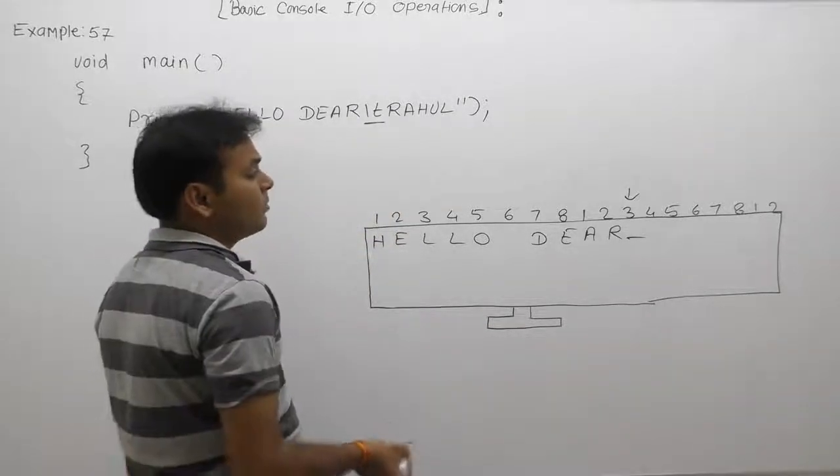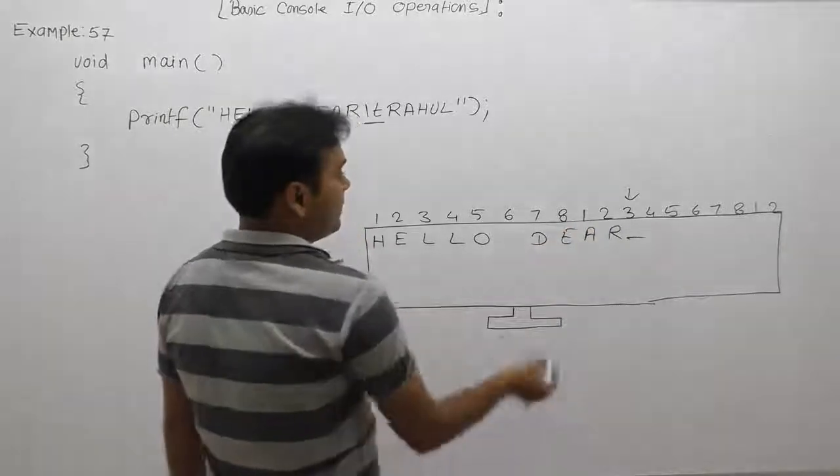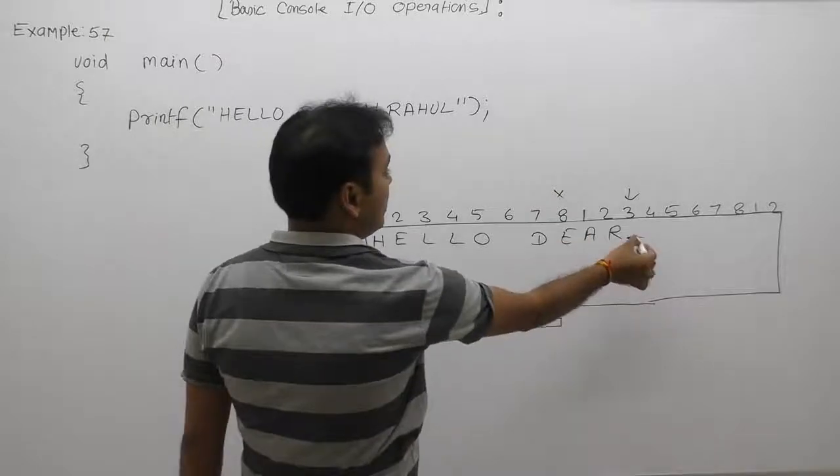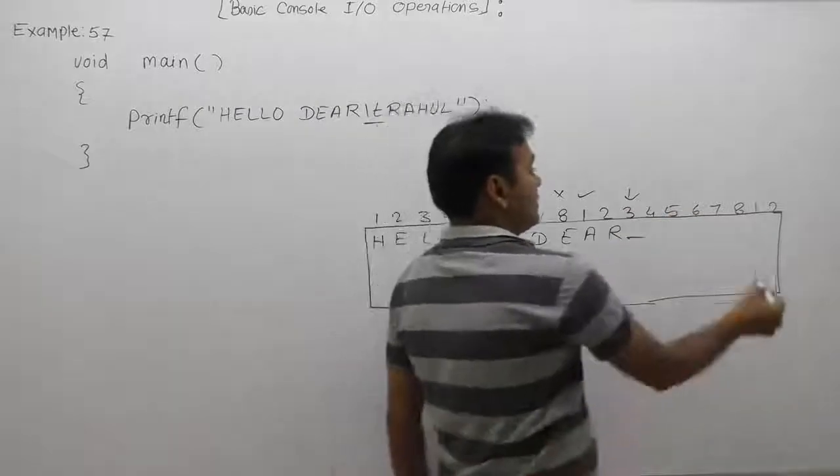We are skipping this part. The current position is third, but it will count one, two, three, four. Therefore the cursor will be moved after the eighth place, means the ninth place.